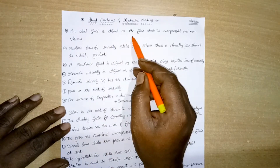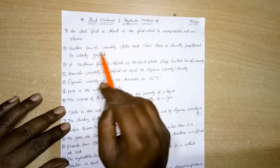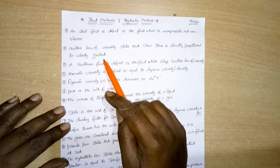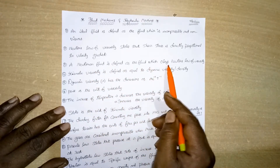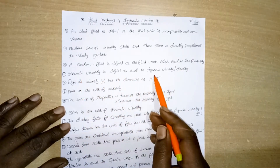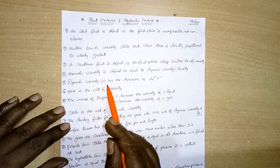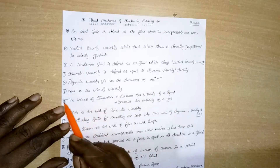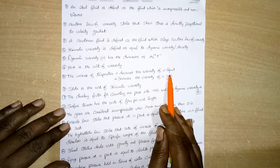An ideal fluid is defined as the fluid which is incompressible and non-viscous. Newton's law of viscosity states that shear stress is directly proportional to velocity gradient. A Newtonian fluid obeys Newton's law of viscosity. Kinematic viscosity equals dynamic viscosity divided by density. Dynamic viscosity mu has dimensions M L⁻¹ T⁻¹. Poise is the unit of viscosity.